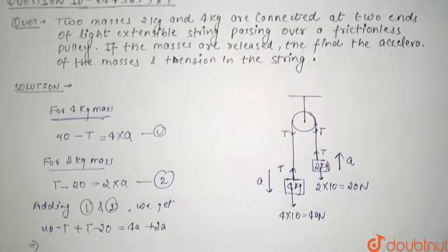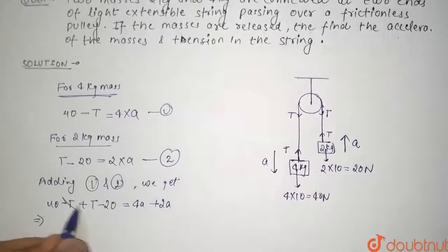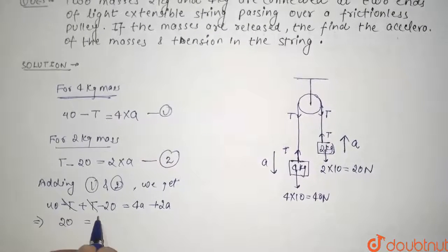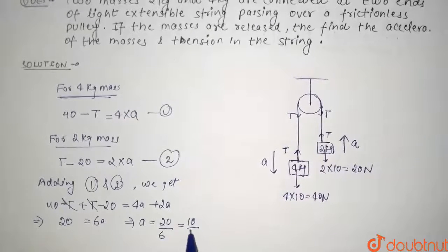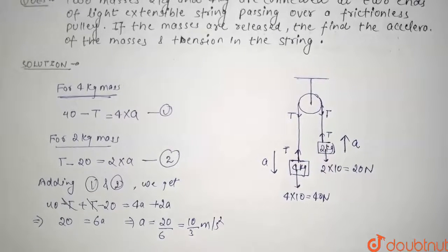So from here T and T will cancel and this comes out to be 20 is equal to 6a. So our acceleration comes out to be 20 by 6 that is 10 by 3 meter per second square. So this is our acceleration.